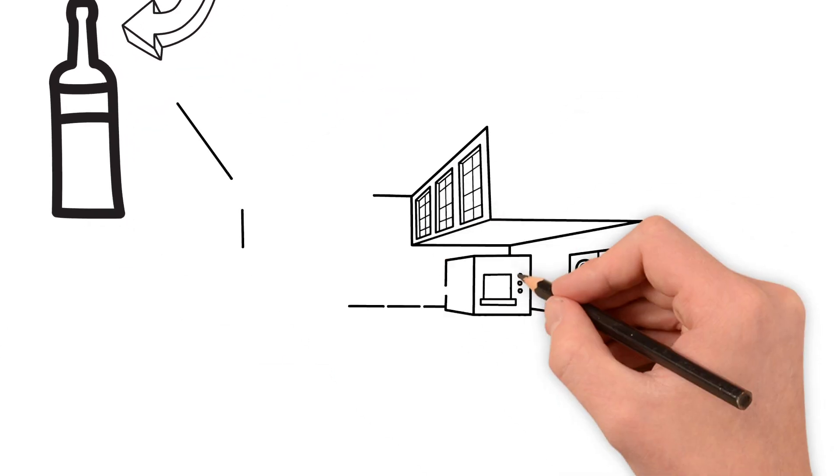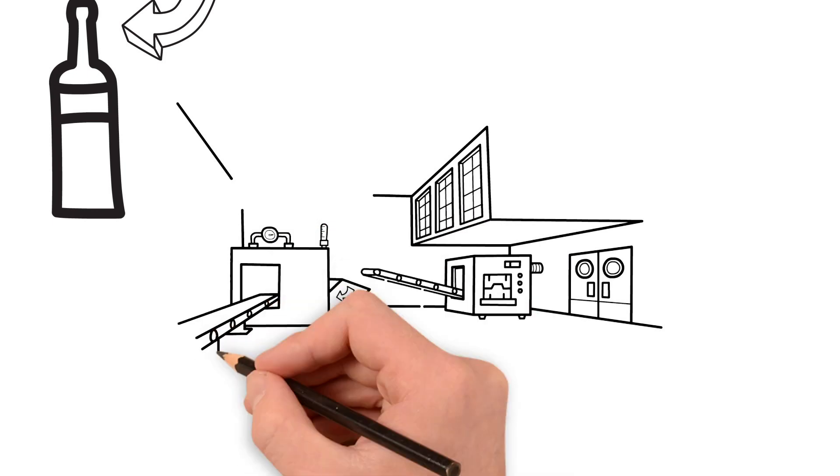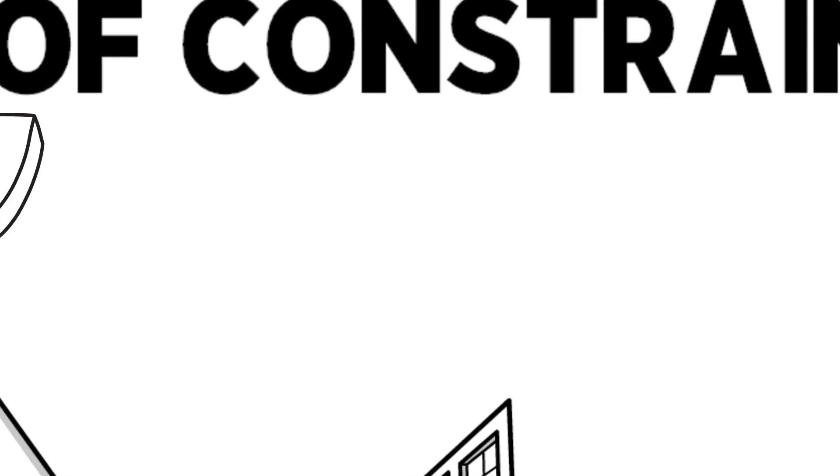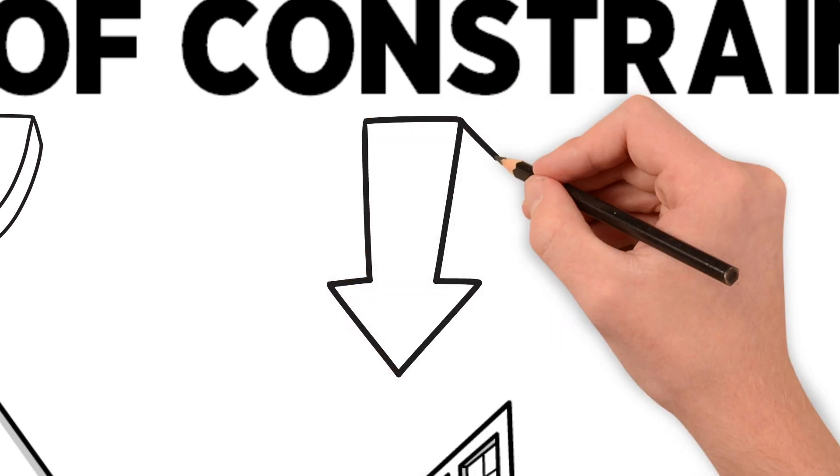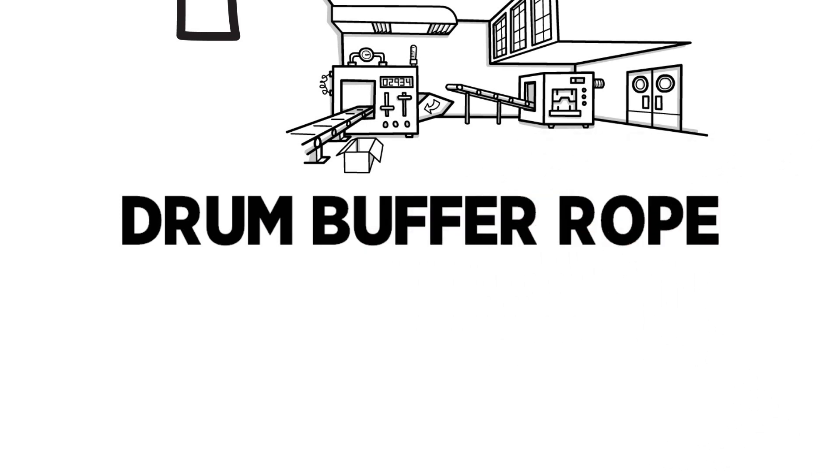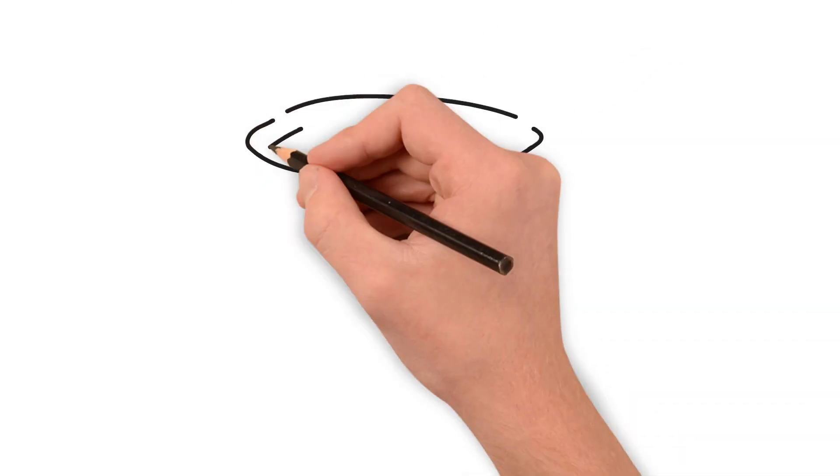The theory of constraints is applicable for all production situations. The drum buffer rope concept describes the necessary steps to use the knowledge efficiently. The bottleneck limits the maximum output of the production. It gives the beat for the production. Therefore it is called drum.